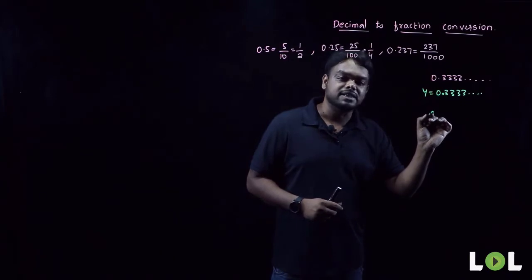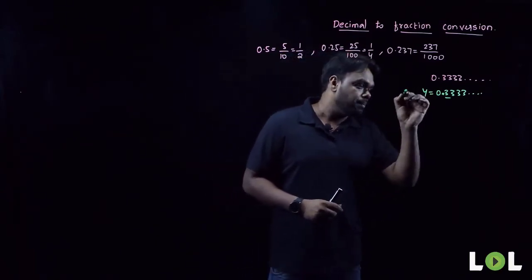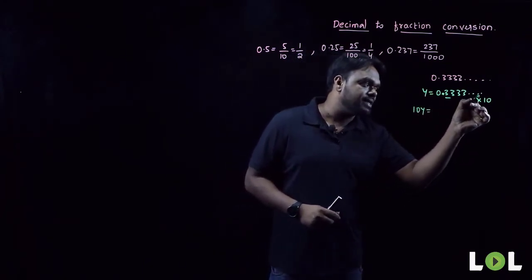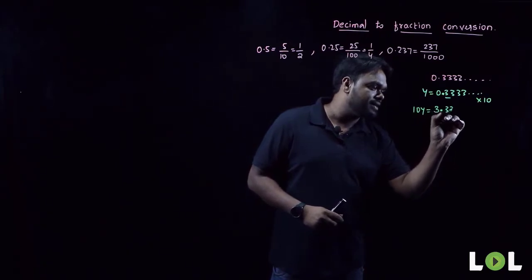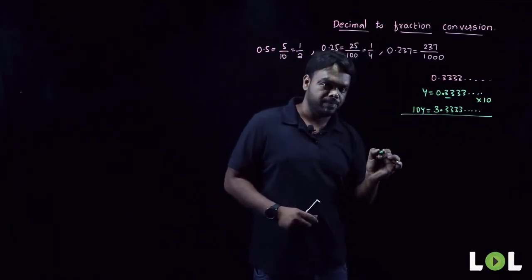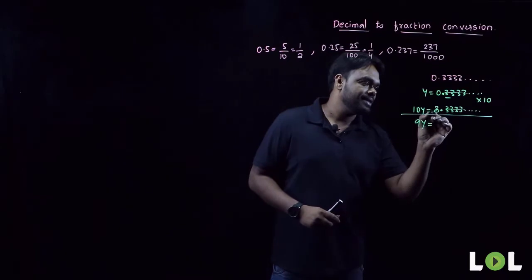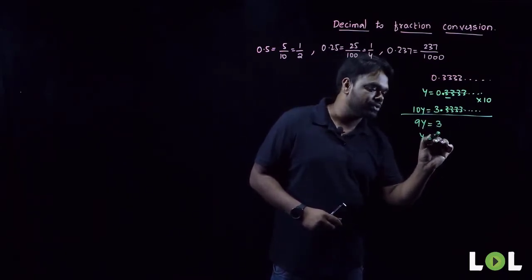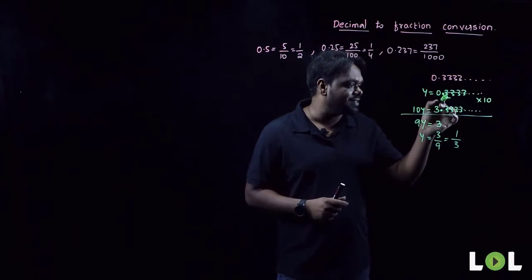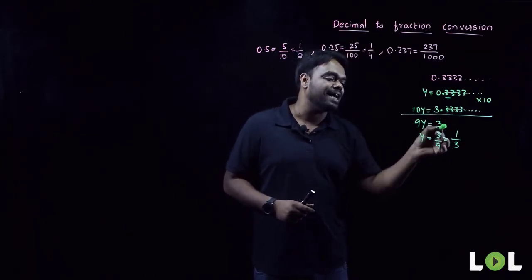After the decimal point, how many digits are recurring? Only one — that is 3. Bring that 3 to the left of the decimal point by multiplying the equation by 10. We get 10y = 3.33333. Now subtract the first equation from the second: 10y − y = 9y, and 0.3333 gets cancelled, leaving 3. So y = 3/9 = 1/3. We eliminated the recurring part and converted it into a fraction.